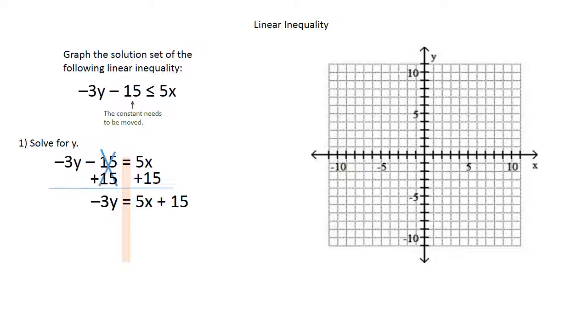I need to divide by the negative 3 that's with the y. I'm going to do that all three places. Mark out the negative 3s that are with the y, and that leaves me with y equals negative 5 thirds x minus 5. So the 5 over negative 3 does not simplify. I'm just going to take that negative out front, and 15 divided by negative 3 is negative 5.